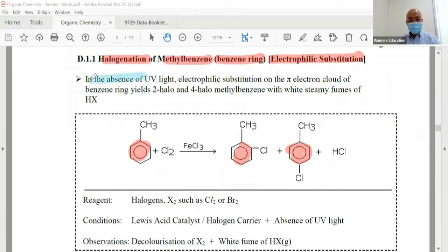In the absence of UV light, electrophilic substitution on the pi electron cloud of the benzene ring will give you usually one product, but here we've got two products. White fumes - this is not the first time we saw this.